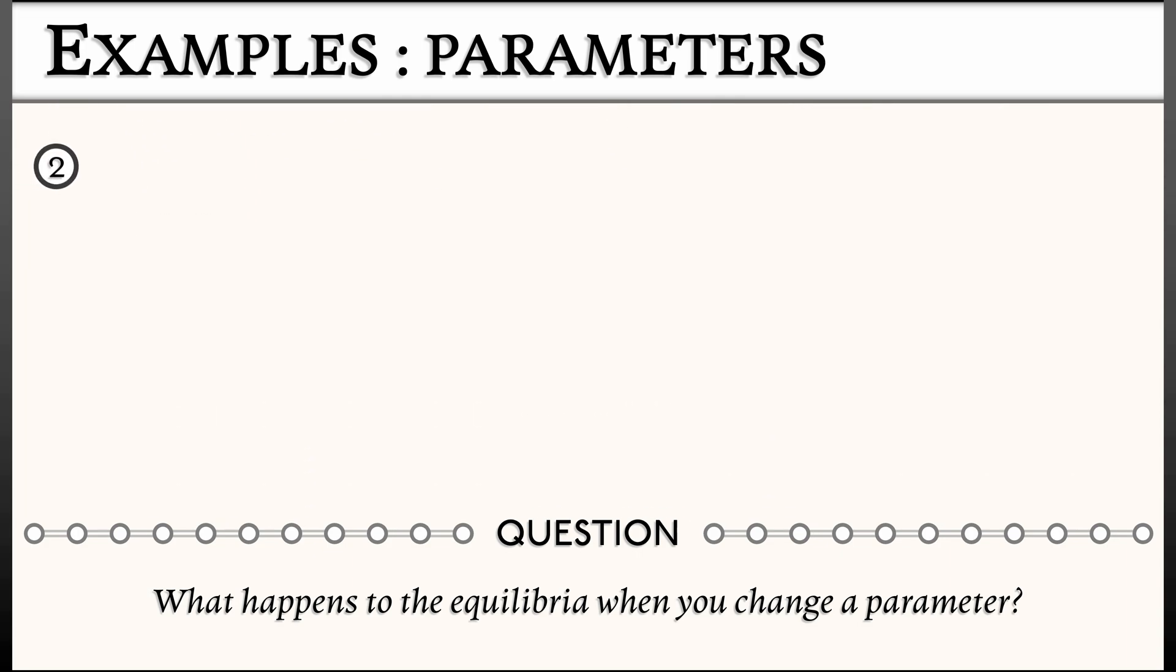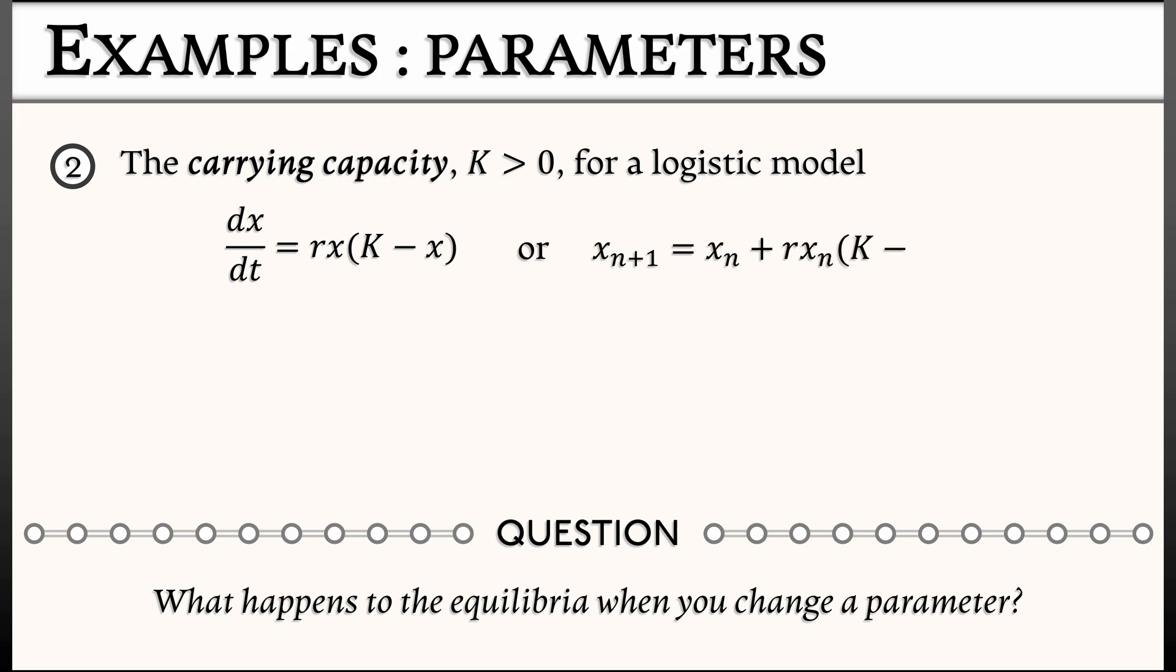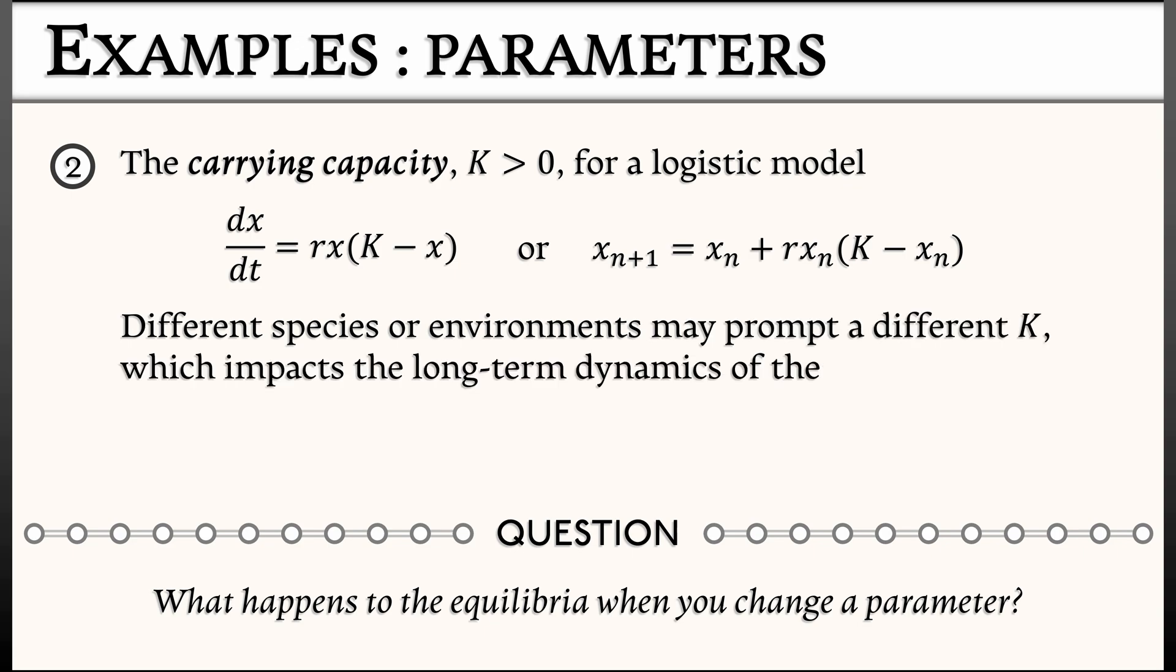For a different example, something we've seen very often at the beginning of this series was the logistic model, which had a parameter, the carrying capacity, capital K. This was a positive constant. Whether we're in continuous time, where dx/dt = rx(K - x), or x_{n+1} = x_n + rx_n(K - x_n), in different circumstances, if you've got different species, different environments, these might have different carrying capacities K. And these also impact the long-term dynamics of the system.